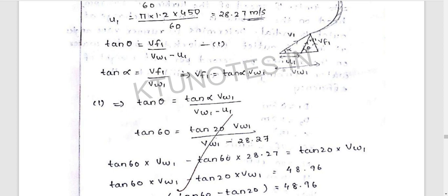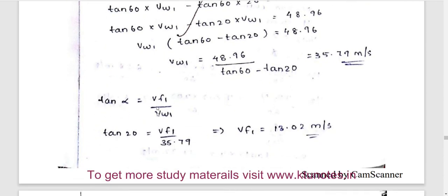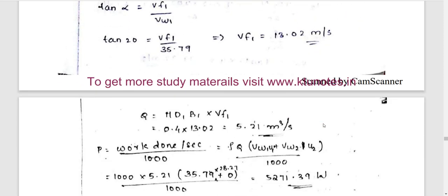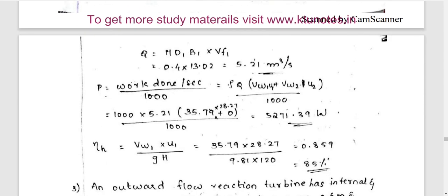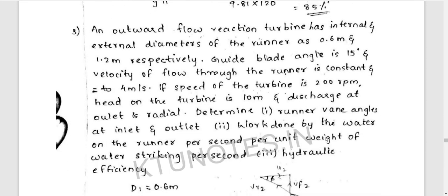From tan alpha we get Vf1, then Vw1. Then Q equals Pi D1 B1 into Vf1. We then calculate work done per second as Rho Q Vw1 U1. Power is Rho Q Vw1 U1, and hydraulic efficiency is U1 Vw1 by gH.